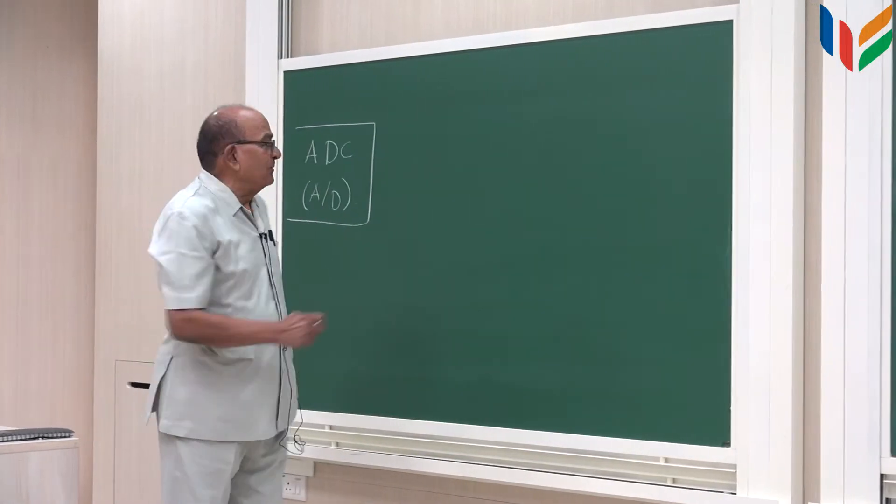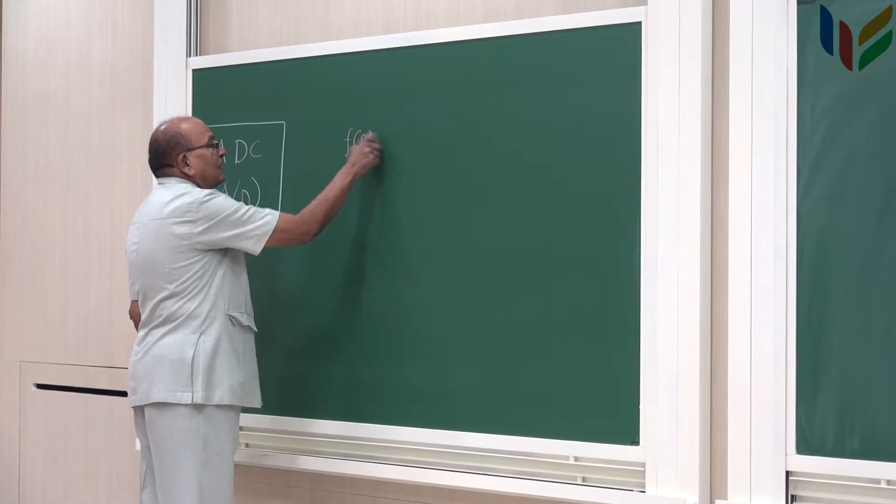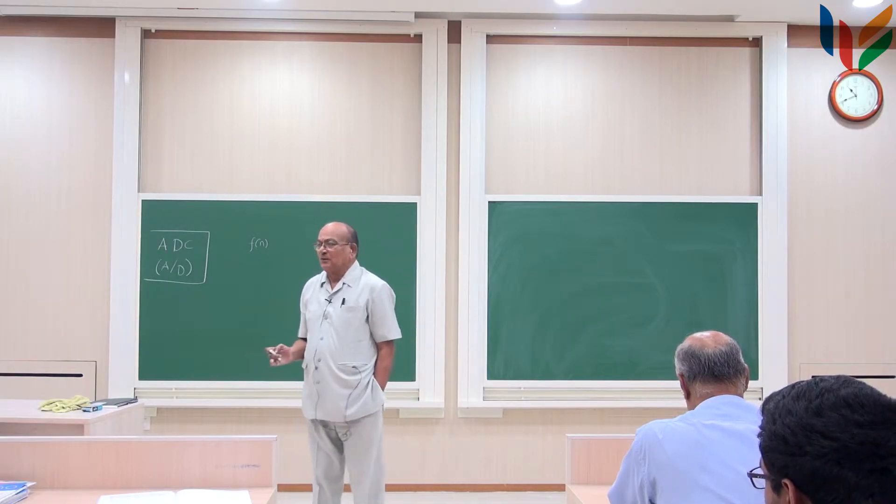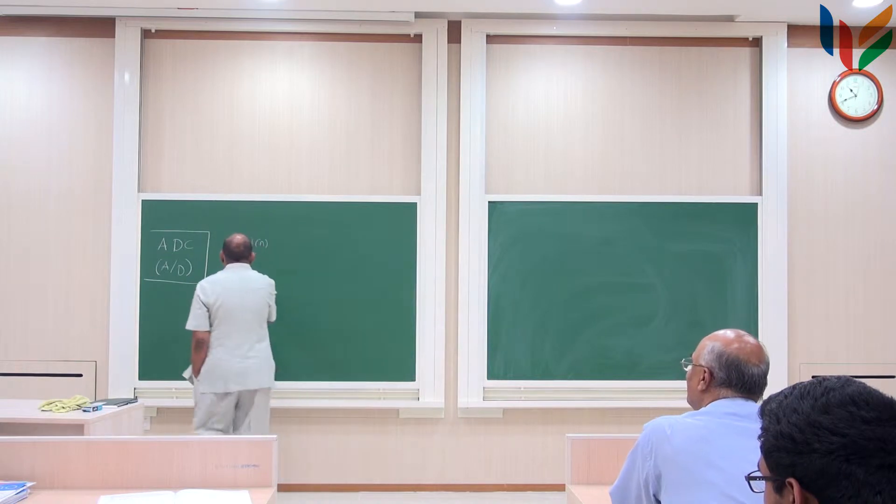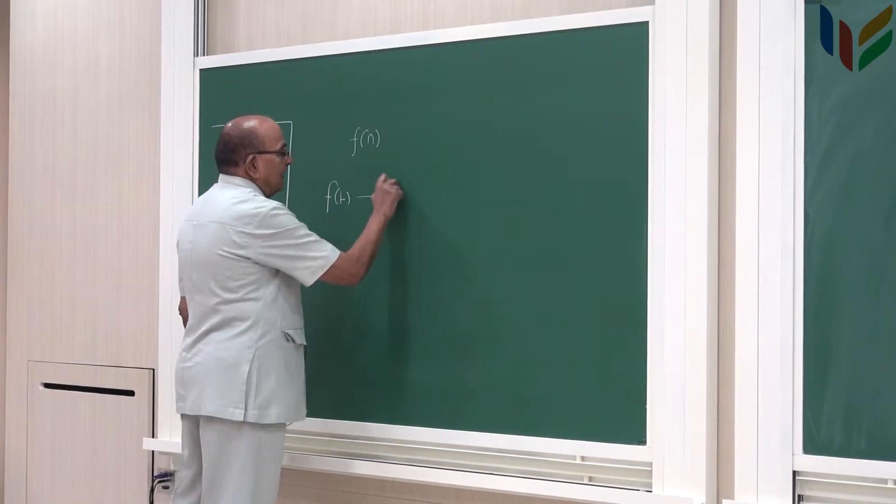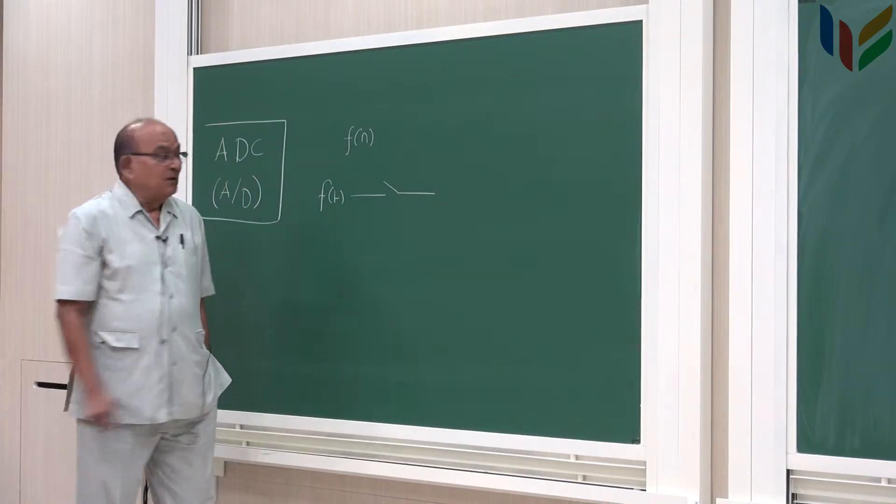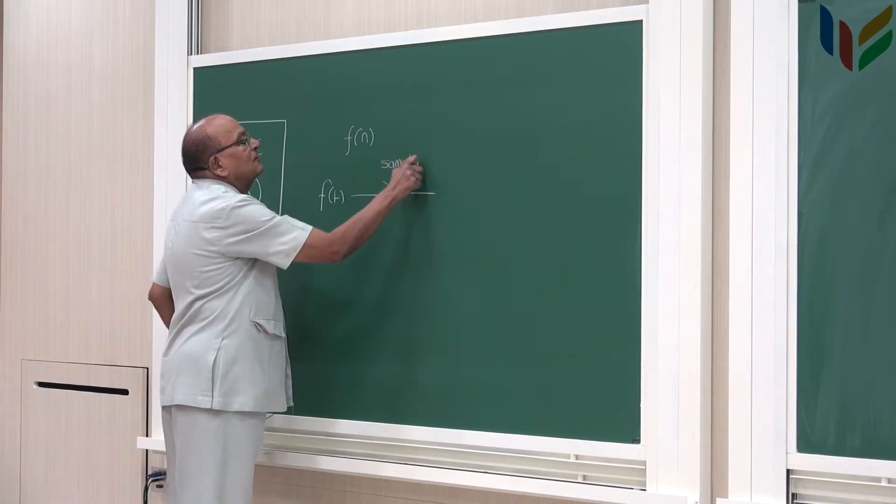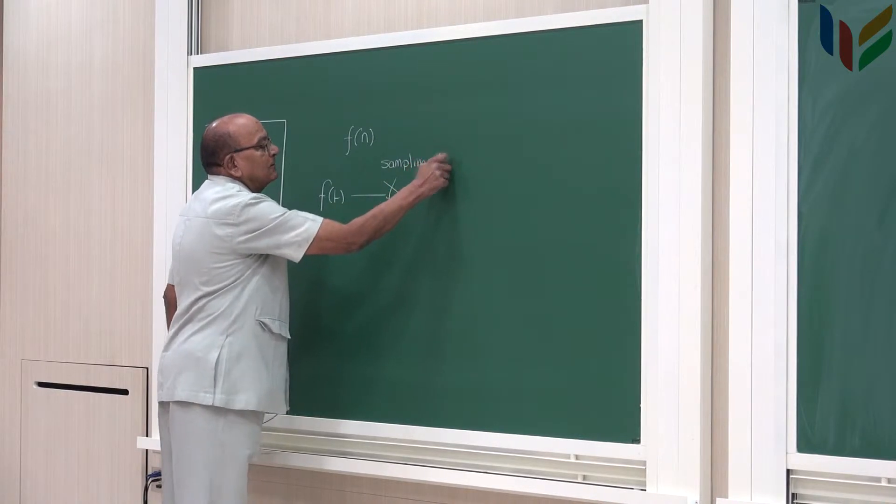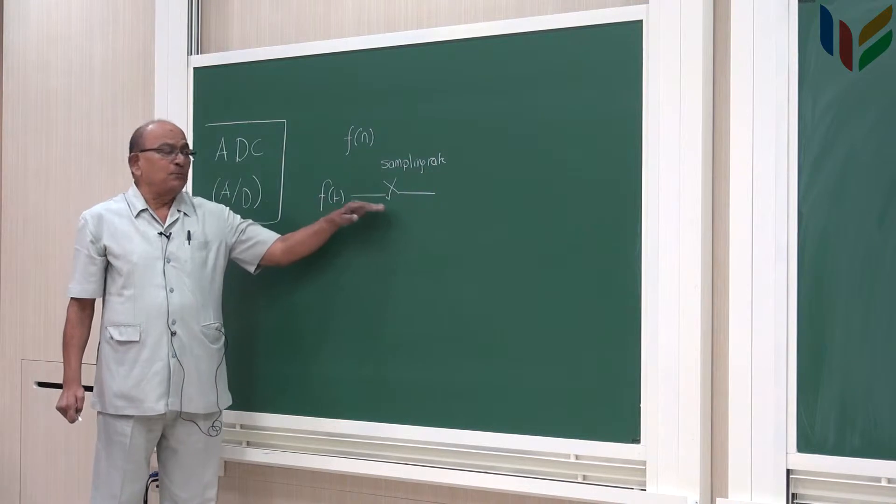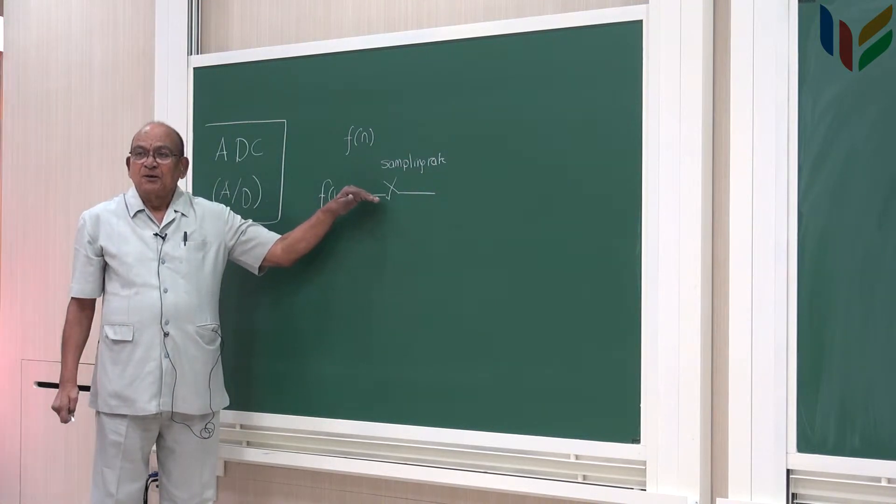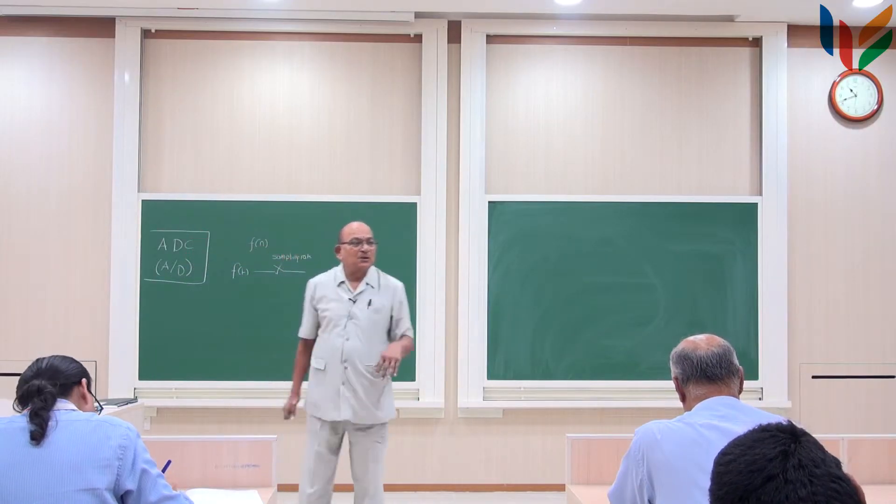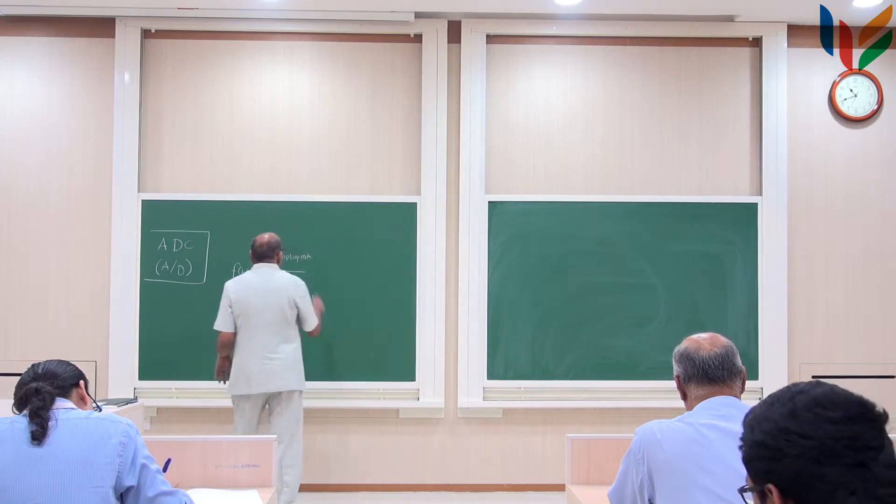The principle is very simple. You are given a sample value f of n. The question here is how did you get the sample value first? We got f of t and in principle, if I have a switch which opens and closes at the sampling rate, this f of t is chopped by this switch. We will use the word chopping because it opens and closes, so it chops the signal, analog signal, and it gives you f of n t.